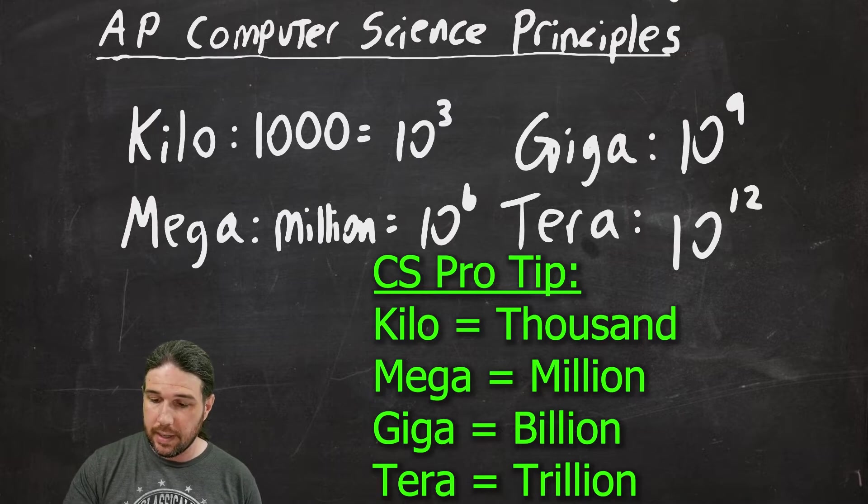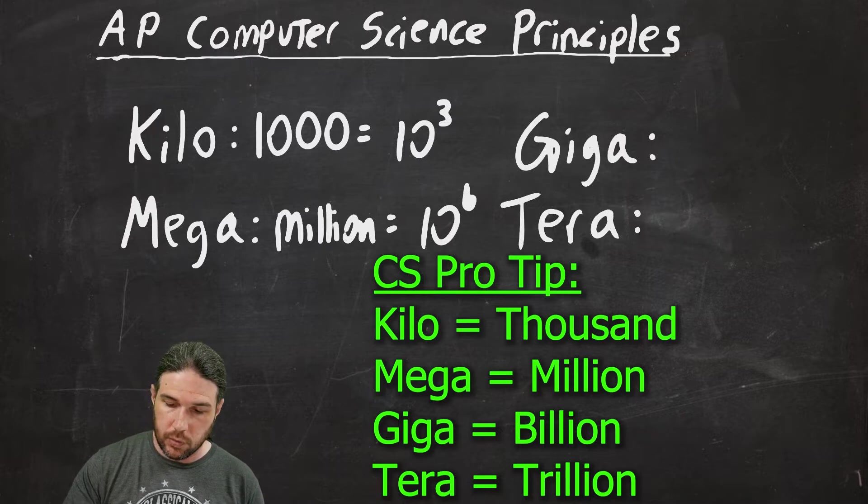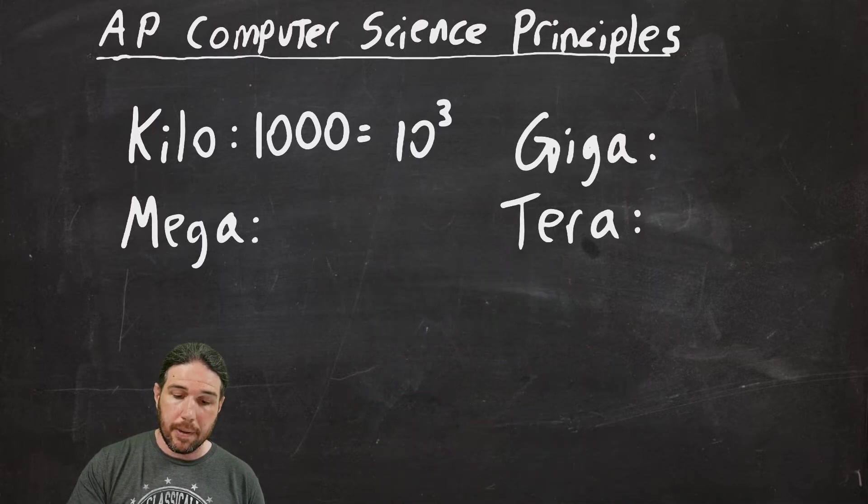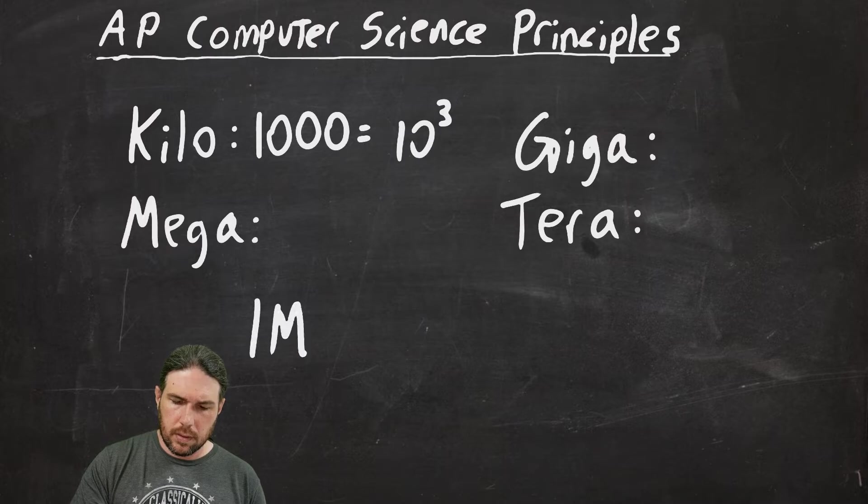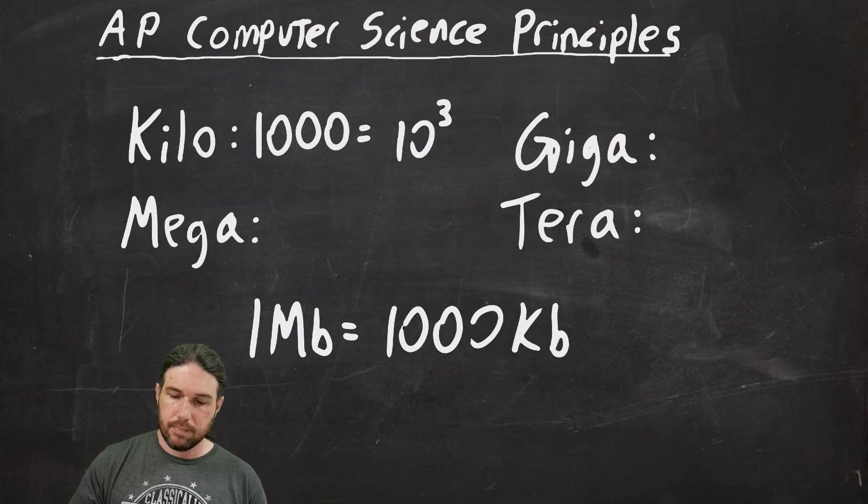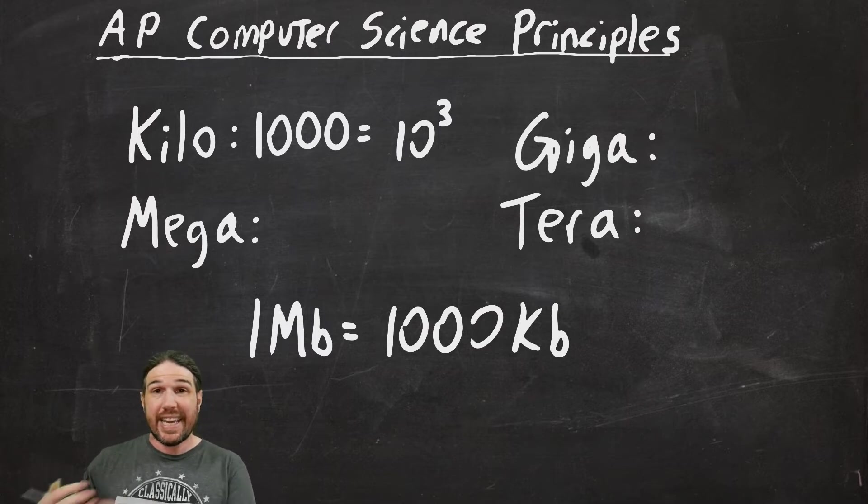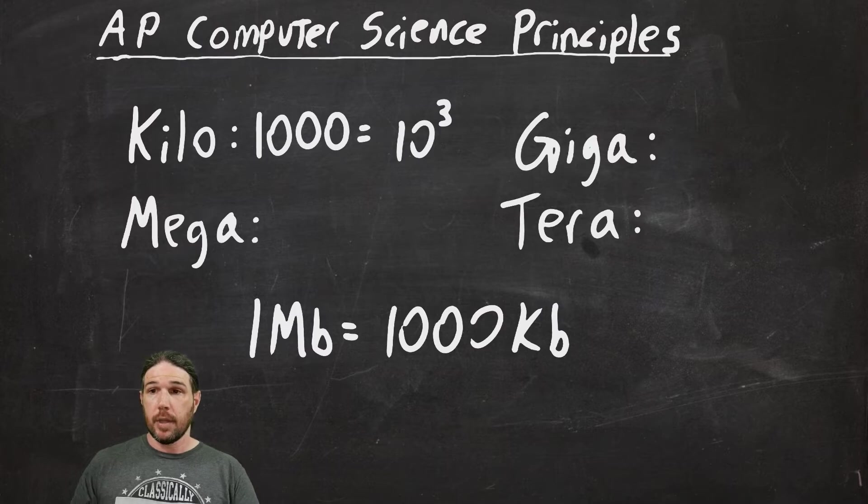I remember that one megabit is one thousand kilobits. Each one scales up by a factor of one thousand. There are one thousand megabits in a gigabit. There are one thousand gigabits in a terabit. So, each one of these is a factor of times one thousand.